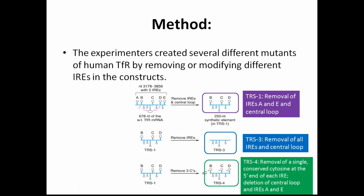The experimenters created several different mutants of human TFR by removing or modifying different IREs in the constructs. In the first mutant construct, TRS1, IREs A and E, as well as the central stem loop, were removed. In TRS3, the central loop and all IREs were removed. And in the final construct, TRS4, the central loop was again removed, but this time a single highly conserved cytosine was deleted from the end of IREs B, C, and D.